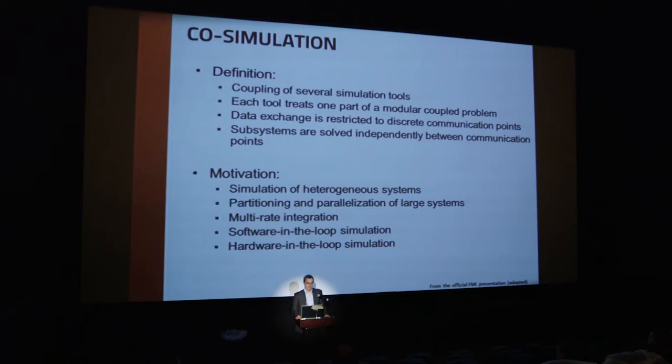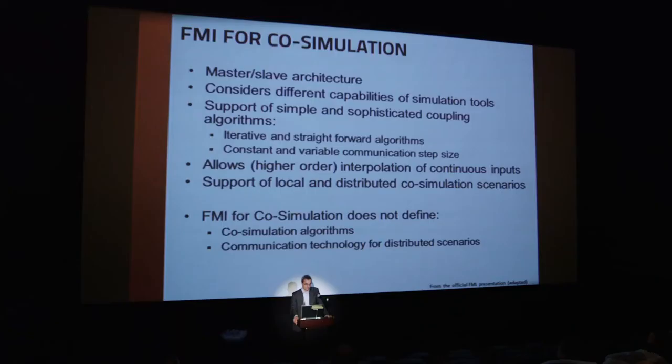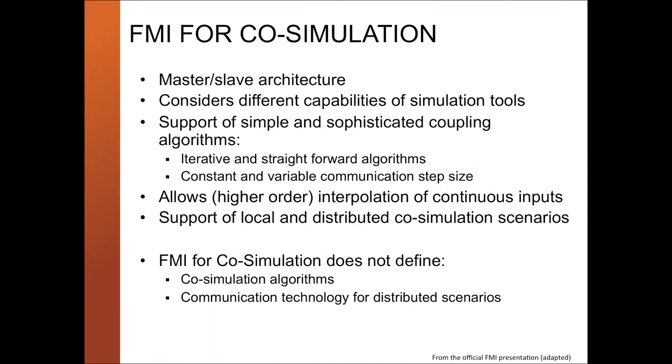Let's now look at the co-simulation part of FMI. We can couple several simulation tools, and each tool treats one part of the modular coupled problem. The advantage is that you can simulate heterogeneous systems, partition and parallelize, and do multi-rate integration. FMI for co-simulation has a master-slave architecture and can take into account different capabilities of simulation tools. An important point is that FMI for co-simulation does not define the actual co-simulation algorithm — it only defines the interface that makes it possible to do very good co-simulation algorithms, but those must be developed by every tool supporting FMI for co-simulation.